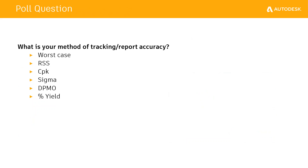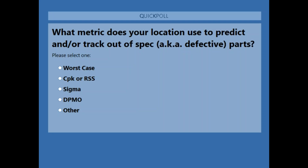We've got a quick polling question: what metric does your location use to predict or track out-of-spec parts? Are you using worst case, CPK or root sum squares, sigma values, defects per million, or a different metric? Clayton and I are both very curious on what the spread is going to be. I'm going to predict 'other' might be the highest category.